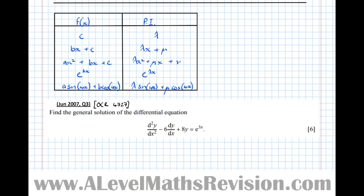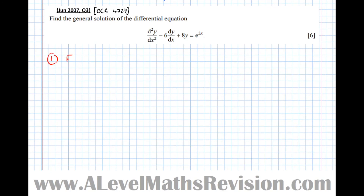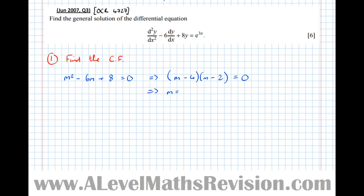Let's now have a go at a question: find the general solution of the given differential equation. Step 1 is to find the complementary function, which tags along contributing 0 to the actual solution. Auxiliary equation: m² − 6m + 8 = 0, which factors as (m−4)(m−2) = 0, implying m = 4 or m = 2. Therefore the complementary function is ae^(4x) plus be^(2x).